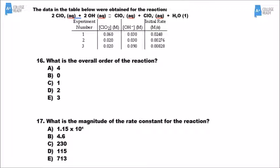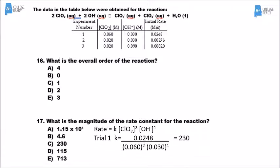For number 17, what is the magnitude of the rate constant? We have a rate law, and I'll pick experiment 1, plugging in all the data — the rate, the ClO₂ concentration, and the OH⁻ concentration. Rearranging so that K is by itself, I get an answer of 230.